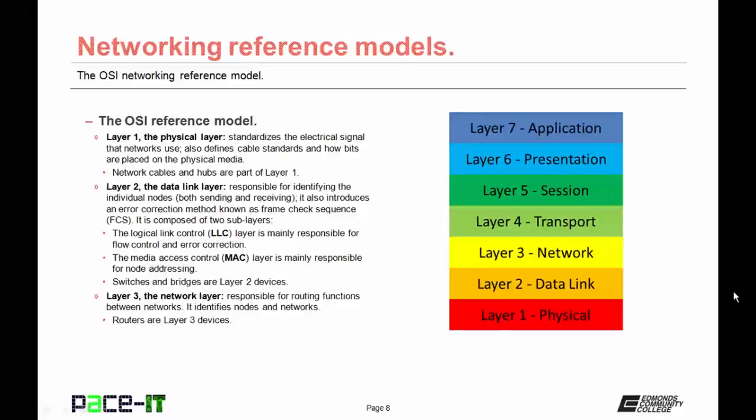Network cables and hubs are part of layer one of the OSI model. Layer two is called the data link layer. It is responsible for identifying the individual nodes — both the sending node and the receiving node. It also introduces an error correction method known as the frame check sequence, or FCS.